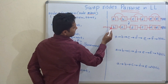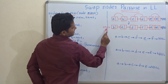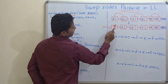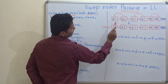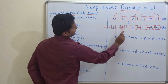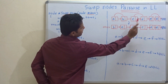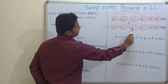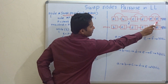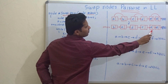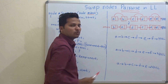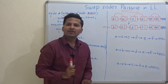You can see in the answer — the swapped linked list — A,B will become B,A; C,D will become D,C; and E,F will become F,E, and the last node will point to null.